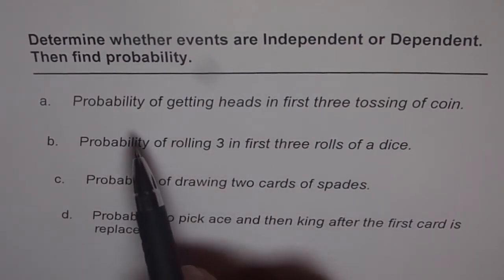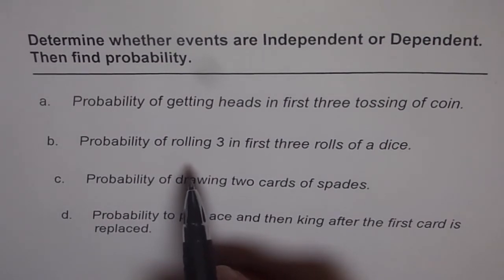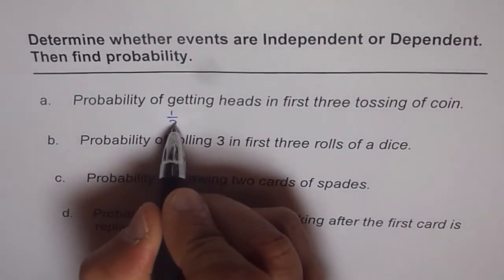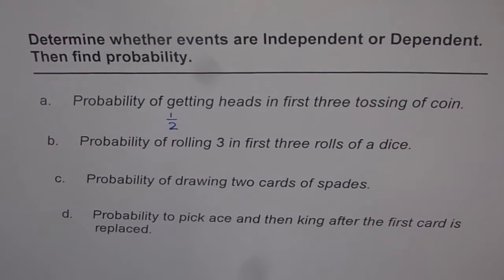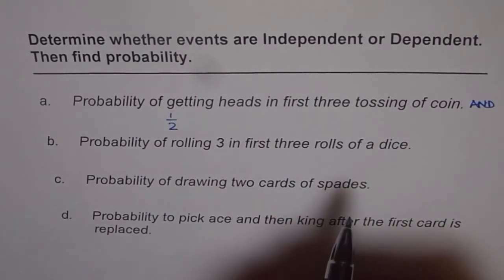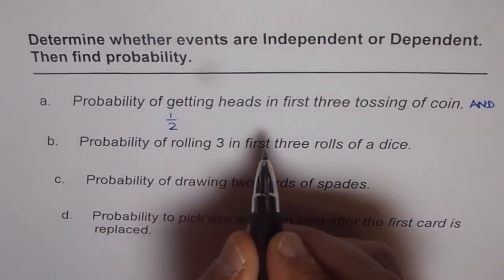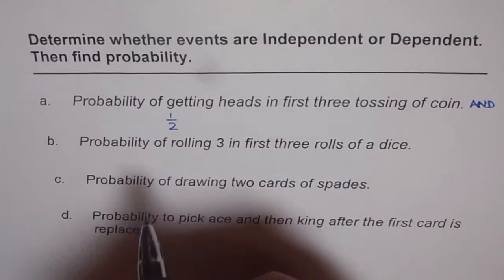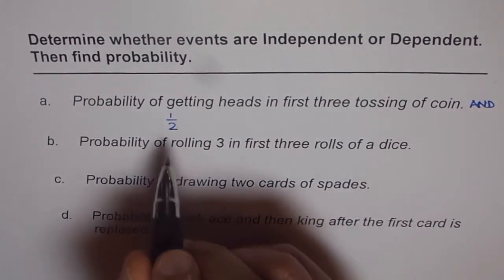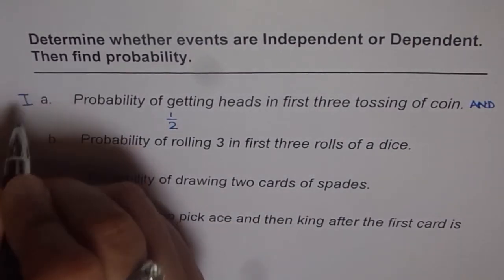For question number one, probability of getting heads in the first three tossings of a coin — when you toss a coin, you have heads or tails, two outcomes. The probability of getting heads is half. When we say probability of getting heads in first three tossings, that means it is an AND operation: heads and heads and heads. AND means you multiply the probabilities. Also, the outcome of the second toss is not affected by the first. It does not matter what happened in the previous toss. So this event is independent. I will write I for independent here.